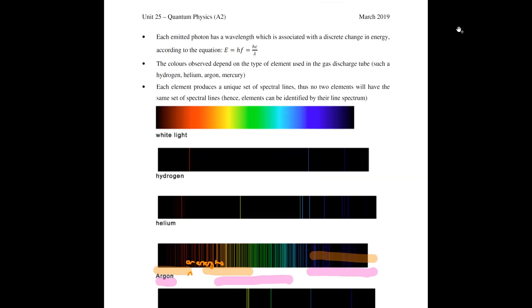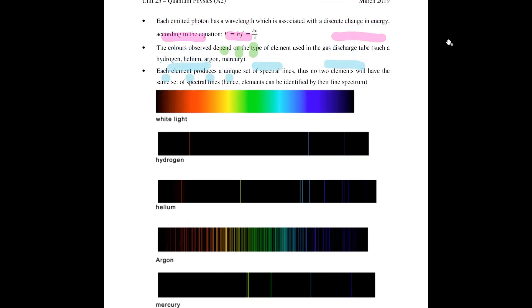Each of the emitted photons has a wavelength associated with a discrete change in energy, which you can calculate as E = hf = hc/λ. The colors that you observe depend on the type of element used in your gas discharge tube — the element can vary between hydrogen, helium, argon, or mercury. Each of those specific elements will produce its own unique set of spectral lines.